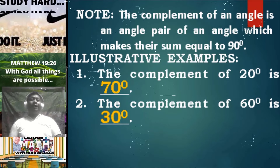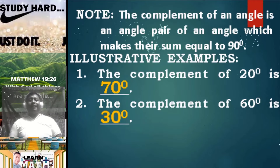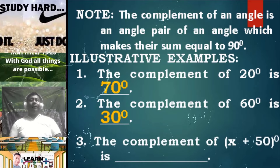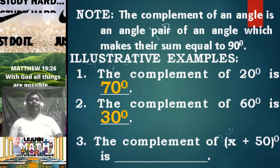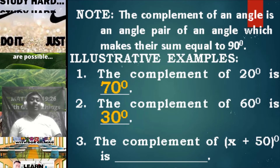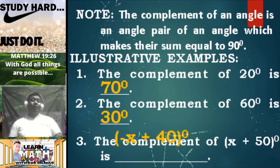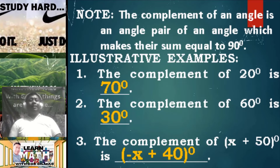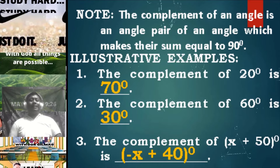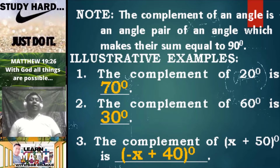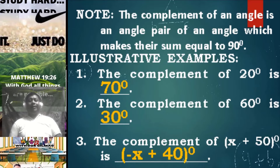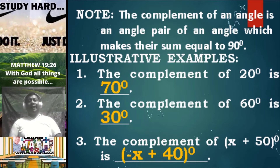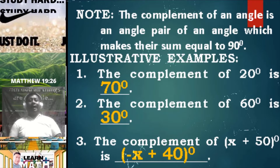Number three, the complement of the quantity (X + 50) degrees is (-X + 40) degrees, since (X + 50) + (-X + 40) is simply equal to 90 degrees, since X and negative X will be cancelled out as they are additive inverses.